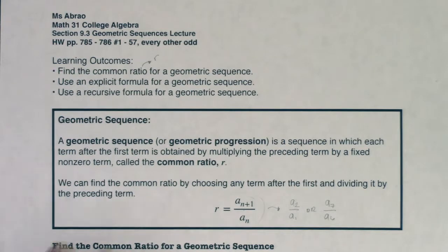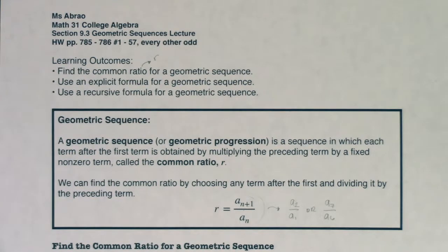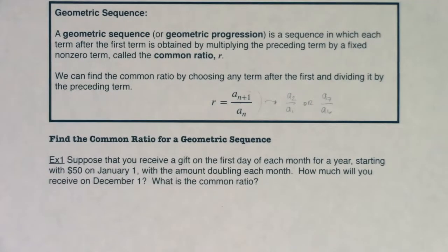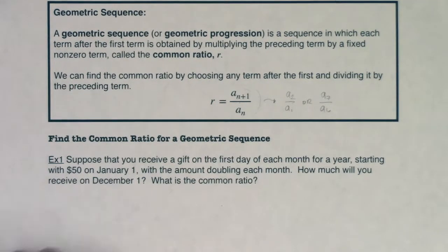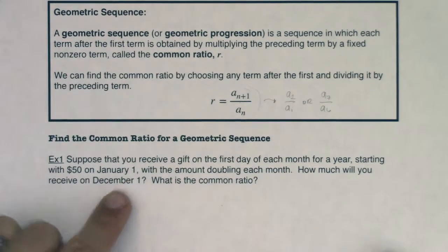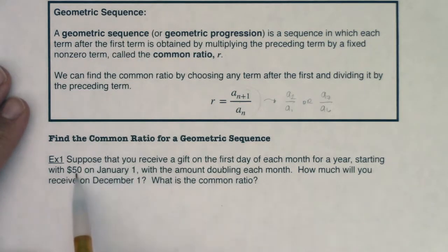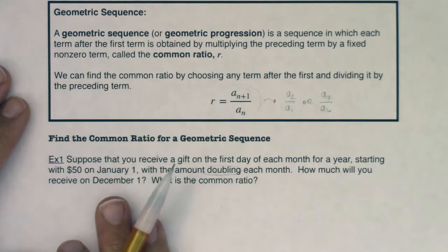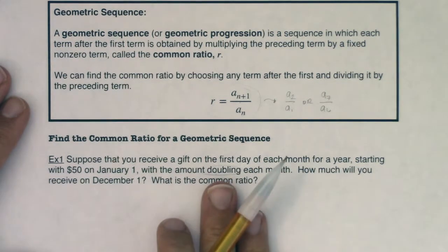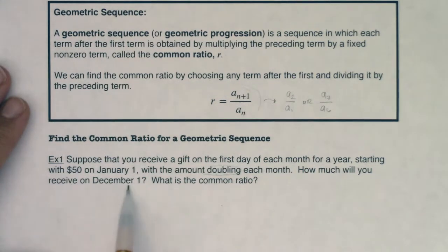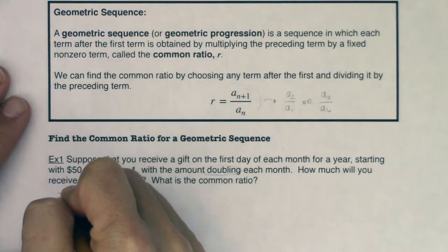Before we get to a more formulaic approach, let's think about this in terms of a real world setting. So let's scooch up the page and take a look at example 1. We have example 1 here saying suppose you receive a gift on the first day of each month for a year, starting with $50 on January 1st with the amount doubling each month. Now I want you to hear doubling. That means each month you're going to multiply this gift by 2. So here we're multiplying by a number. In section 9.2, we were adding and subtracting numbers to get from one term to the next. Now we're going to double, which is multiplying by 2. How much will you receive on December 1st? And let's see if we can spot that common ratio.